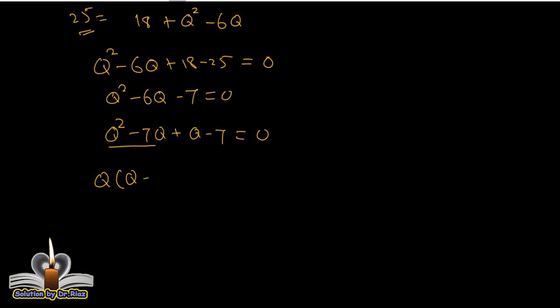Q(Q minus 7) plus we take 1 as common: 1(Q minus 7) equals 0. So we take this factor as common, Q minus 7. We are left with Q plus 1.